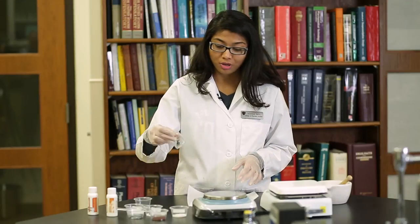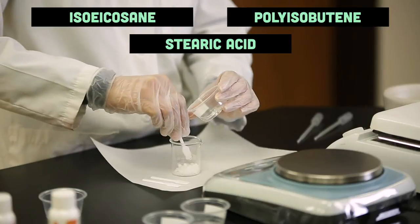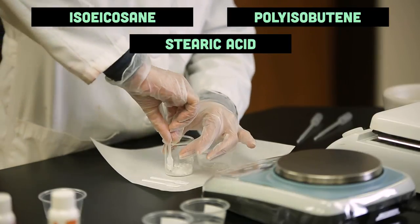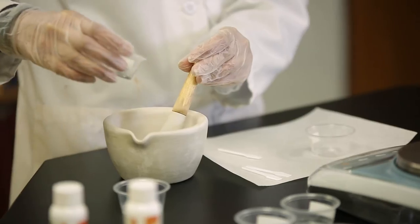We will first put our waxes and our gel in a beaker to melt it. While that heats, we will grind our colors.